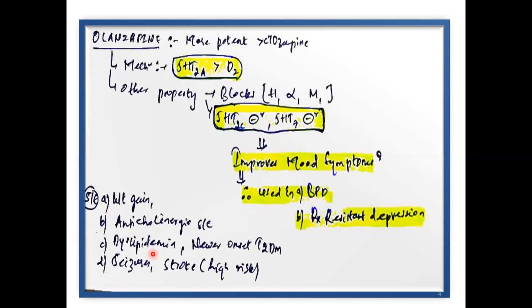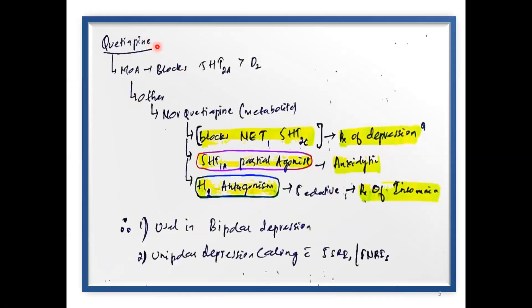Other side effects of Olanzapine include dyslipidemia, new-onset type 2 diabetes, seizures, and in trials a high risk of causing stroke. Moving to another atypical antipsychotic — Quetiapine. Its mechanism is the same: blocking the 5-HT2A receptor.